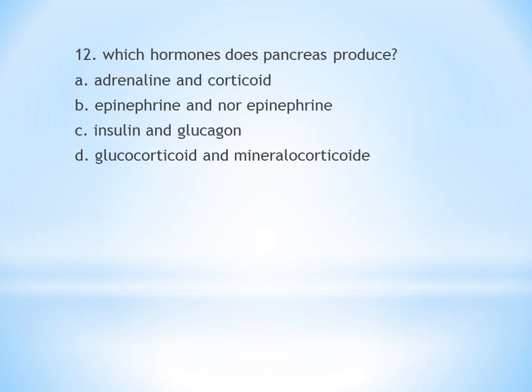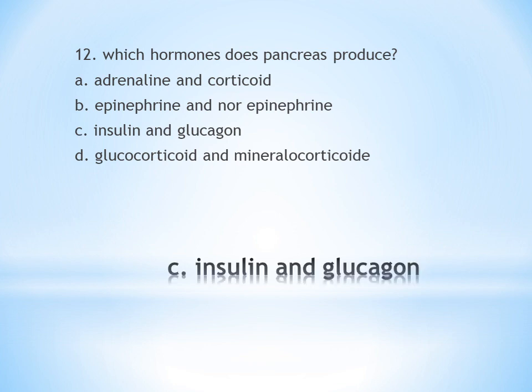Twelfth question: Which hormone does the pancreas produce? A. Adrenaline and corticoid, B. Epinephrine and norepinephrine, C. Insulin and glucagon, D. Glucocorticoid and mineralocorticoid. The pancreas produces insulin and glucagon. Answer is C.